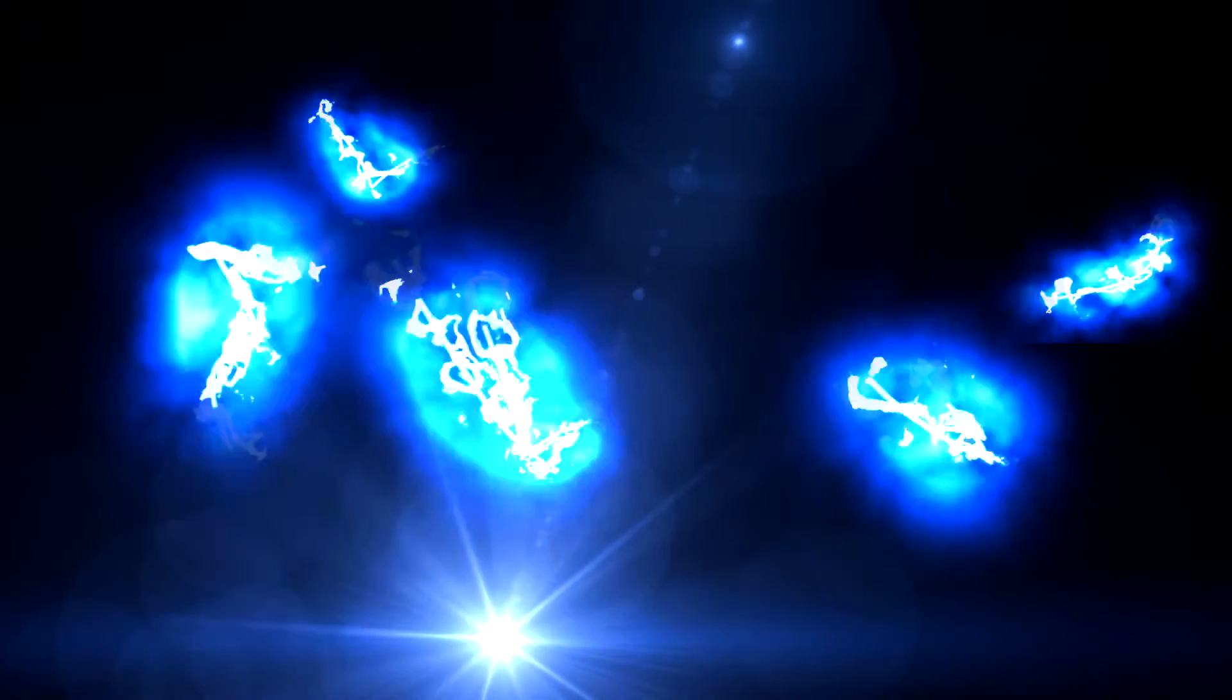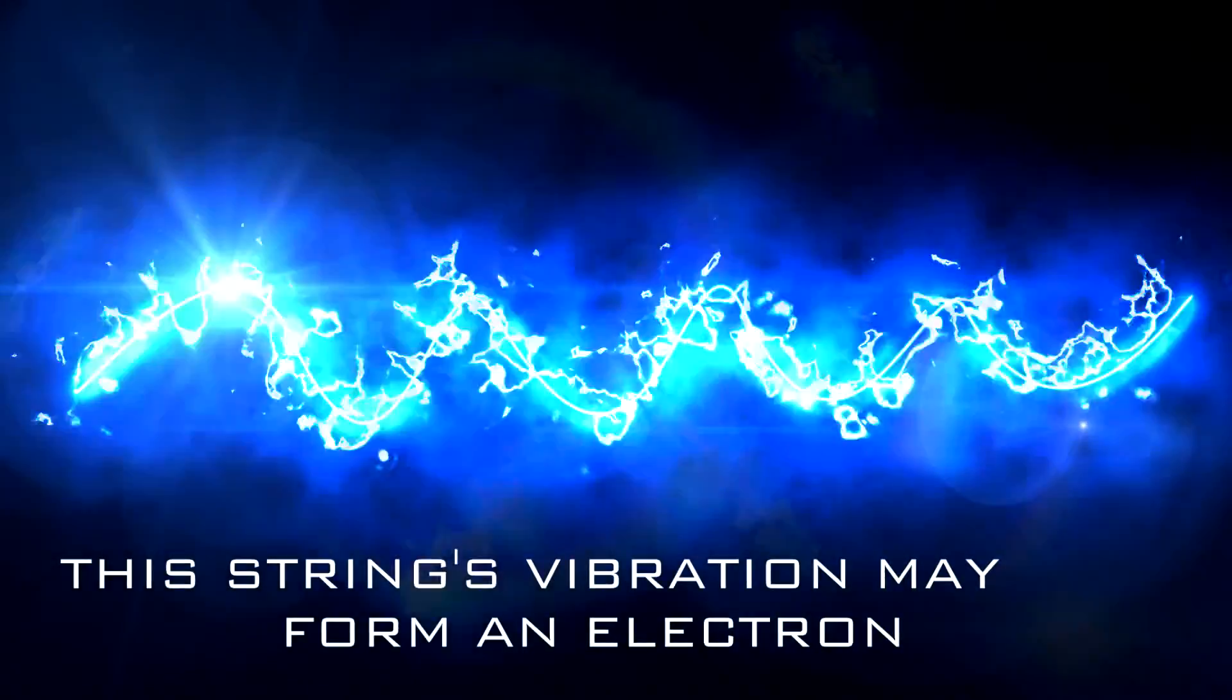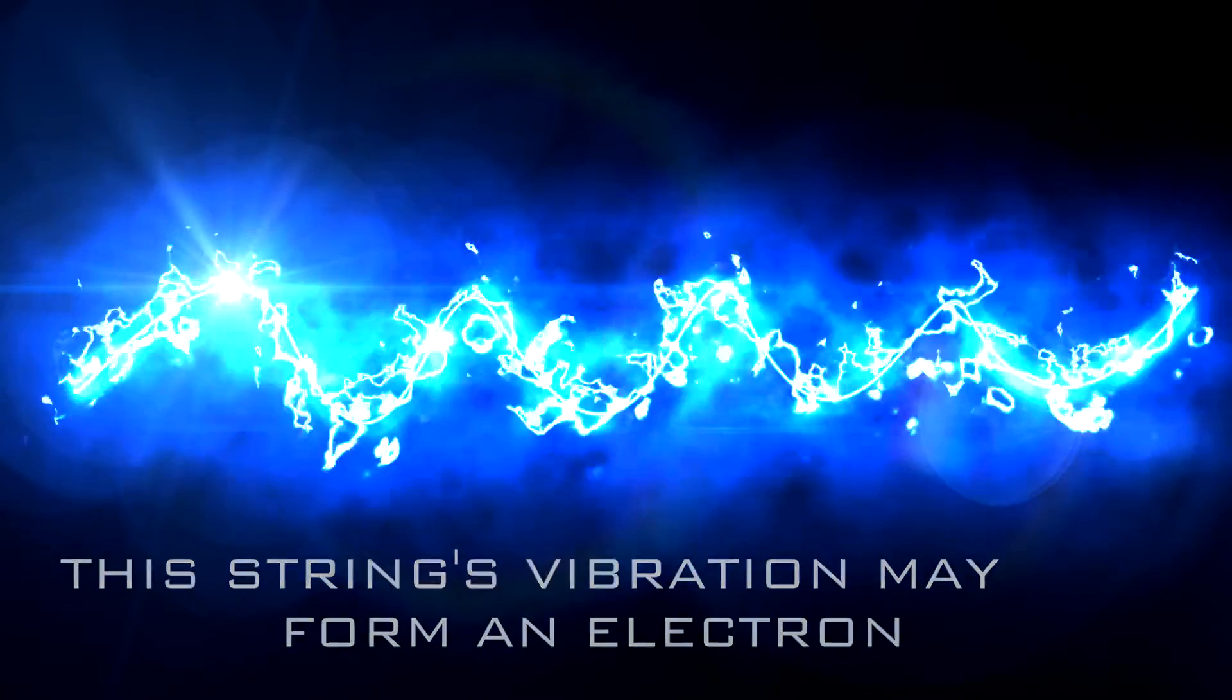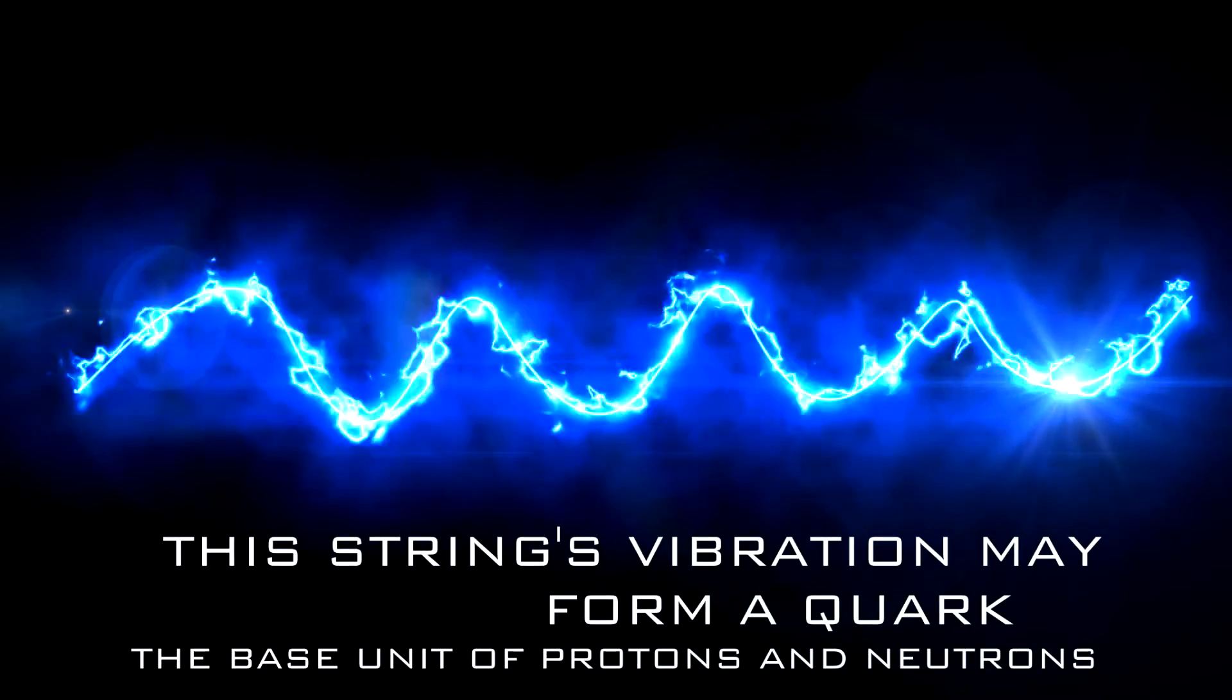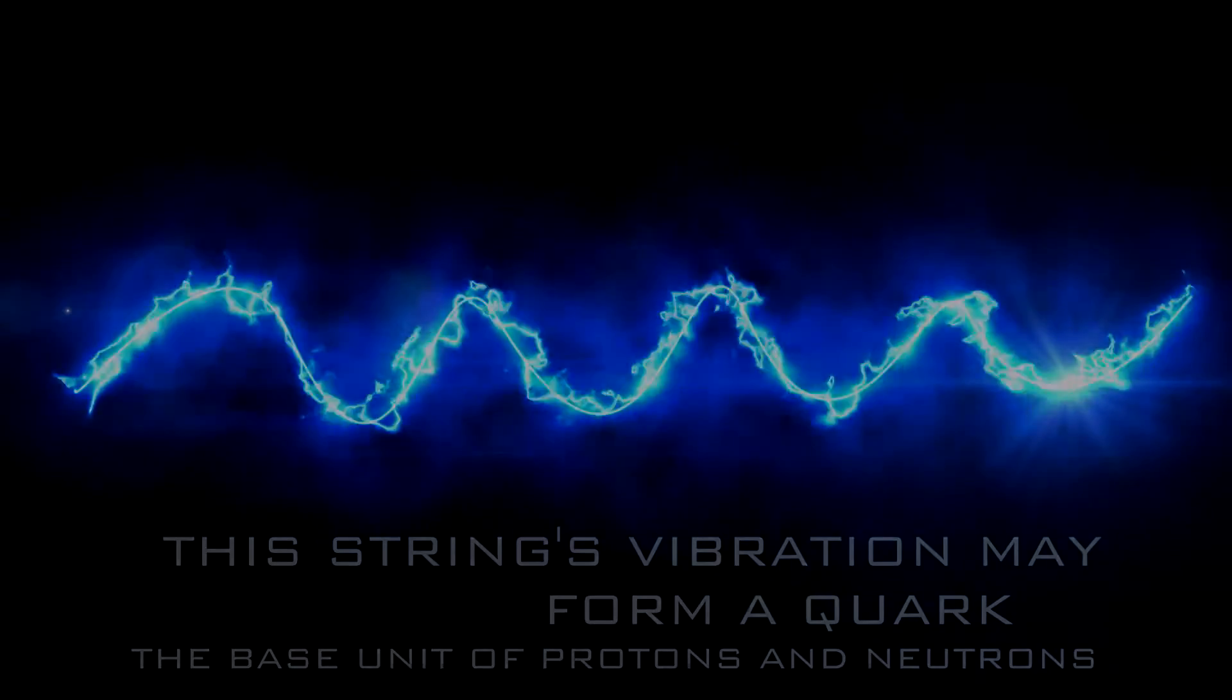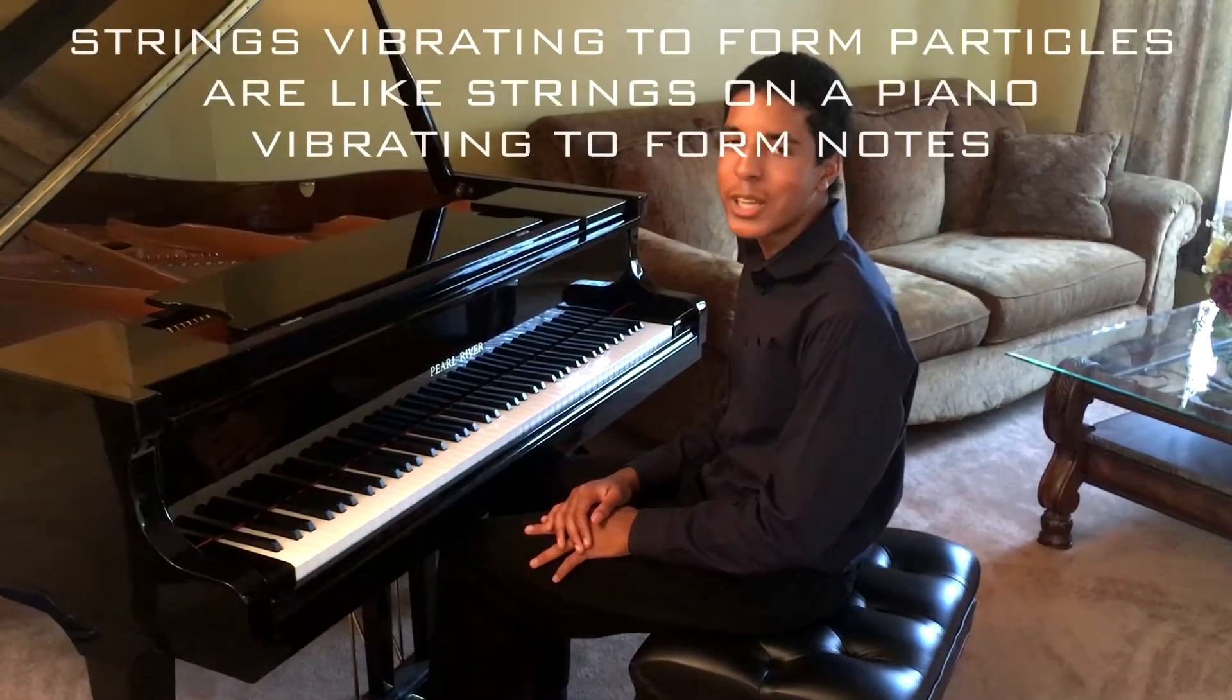Strings make up the elementary particles by vibrating at different frequencies. A string's vibration is what determines the elementary particle. For instance, if a string vibrates at one frequency, it will form an electron, but if it vibrates at another frequency, it forms a quark. This is very much like the strings on a piano.